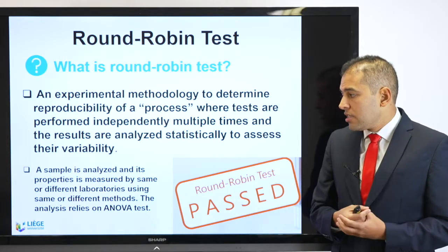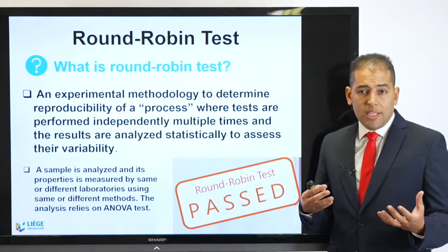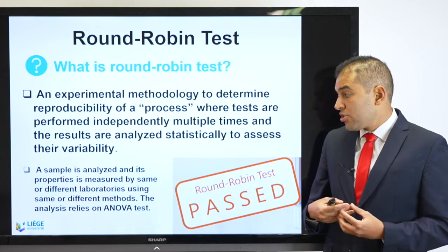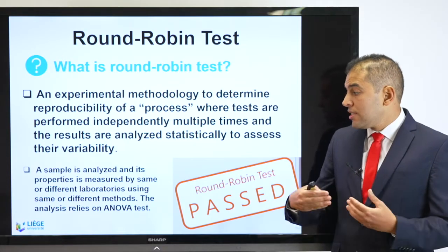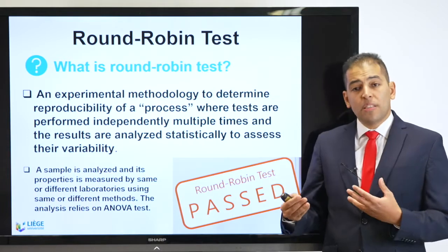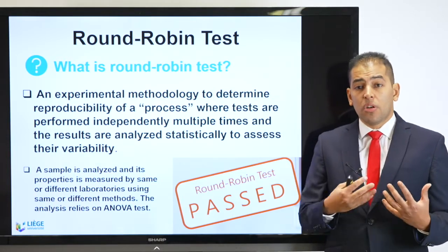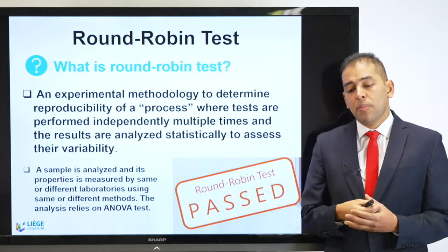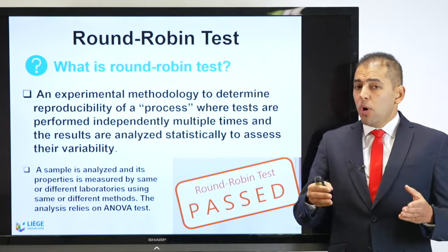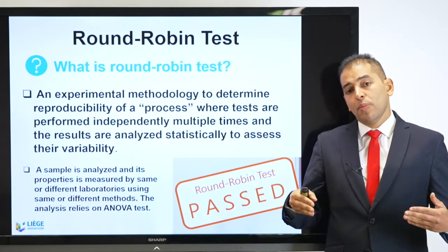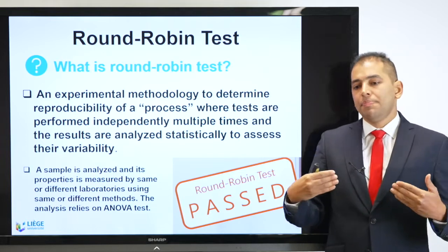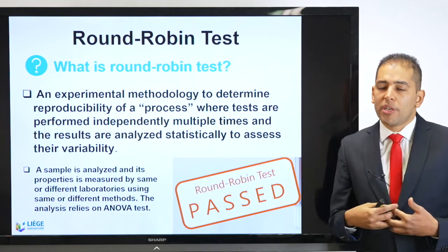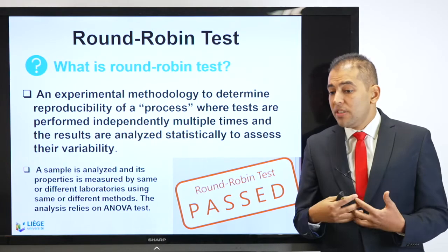For example, I can have a sample — a material sample or a blood tissue sample — whose properties are measured by the same or different laboratories using the same or different methods. Based on an ANOVA test, or analysis of variance, I can check how far the variances in the results are regarding the same test or the same sample. Once the results are within a certain range and they are similar, I can say that my results passed the round-robin test, which gives higher credibility to my work and allows external validation.